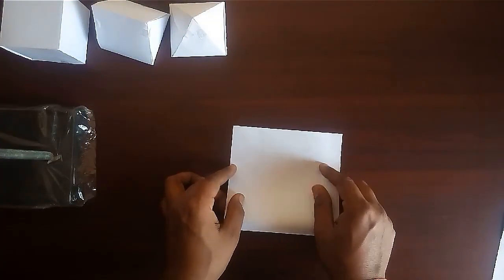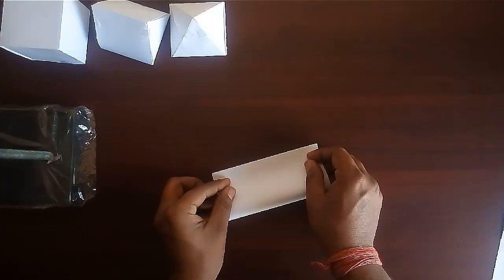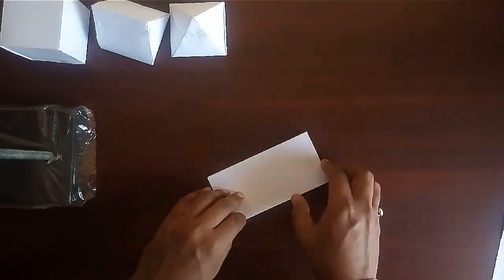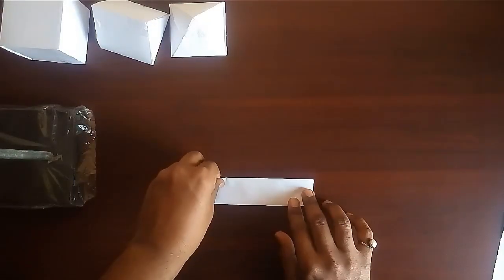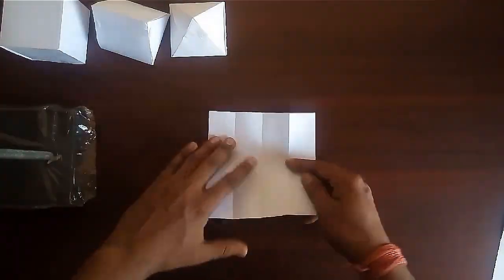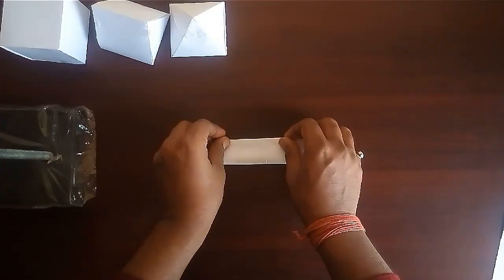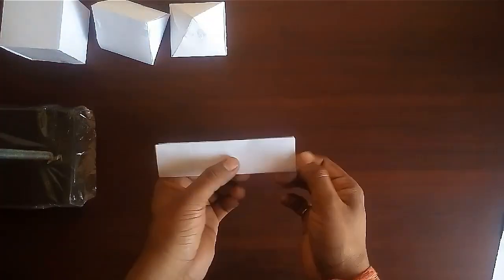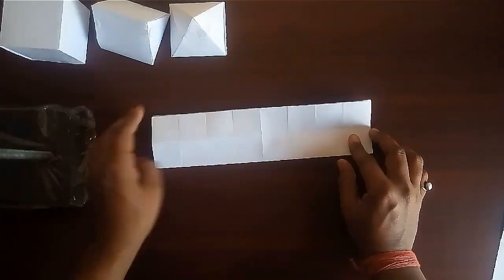Fold the sheet three times along its length and two times along its breadth. Now our sheet is divided into 32 equal squares.